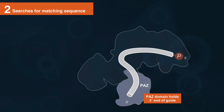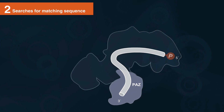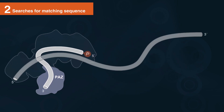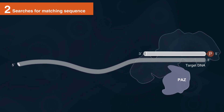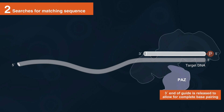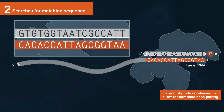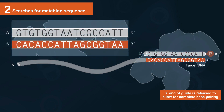The 3' end of the guide is held while the argonaut searches for a matching sequence. The prokaryotic argonaut-guide complex searches for a complementary sequence on the target strand. When a match is found, the 3' end is released to allow for complete base pairing between the guide and substrate.